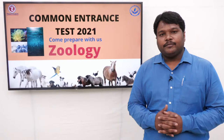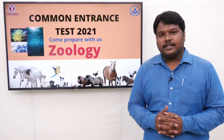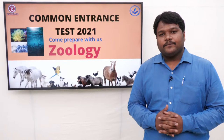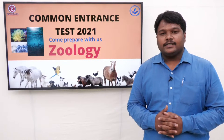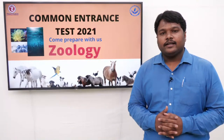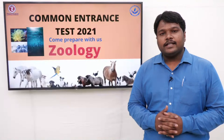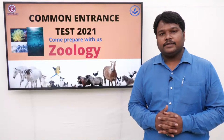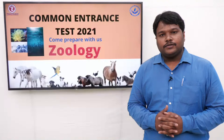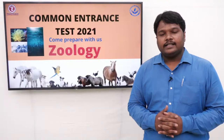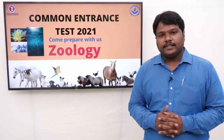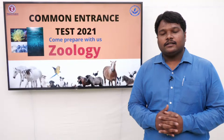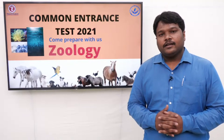You all know that in your intermediate you are having BIPC — biology, physics, and chemistry. In biology, we are having two branches: zoology and botany. Zoology is the branch of science which deals with living organisms, and botany is the branch of science that deals with plants. Today in this live session, we are going to discuss about zoology.